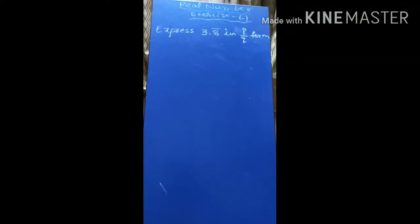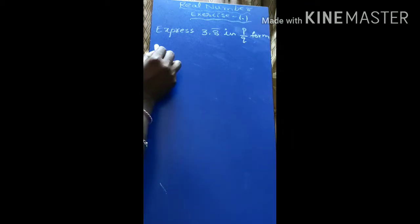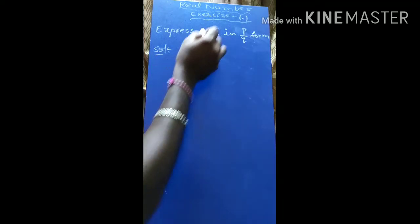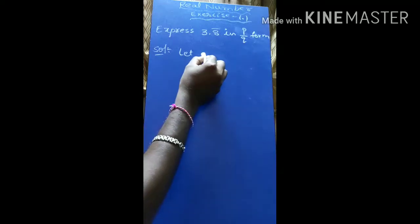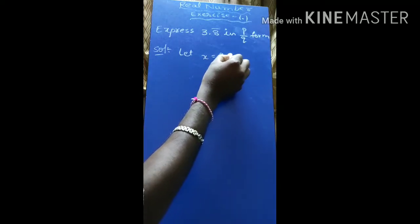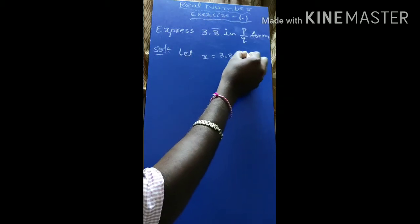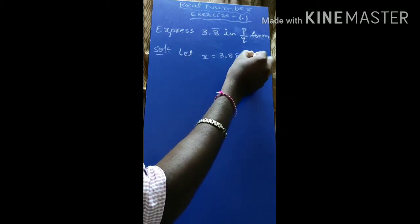Here we see that in exercise 1.5, one more question is: express x = 3.8 bar in P by Q form. So we will see the solution. Let us consider the given value x is equal to 3.8 bar. If you remove the bar, we are getting 3.8 repeating.